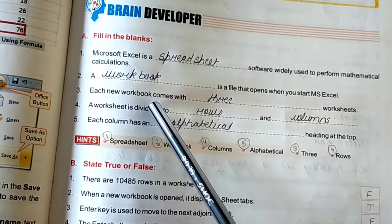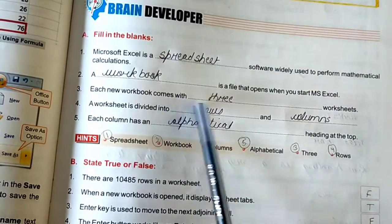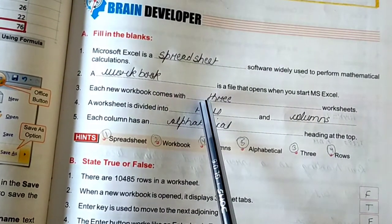Third, each new workbook comes with blank worksheets. A new workbook, how many worksheets do you have? Three worksheets.